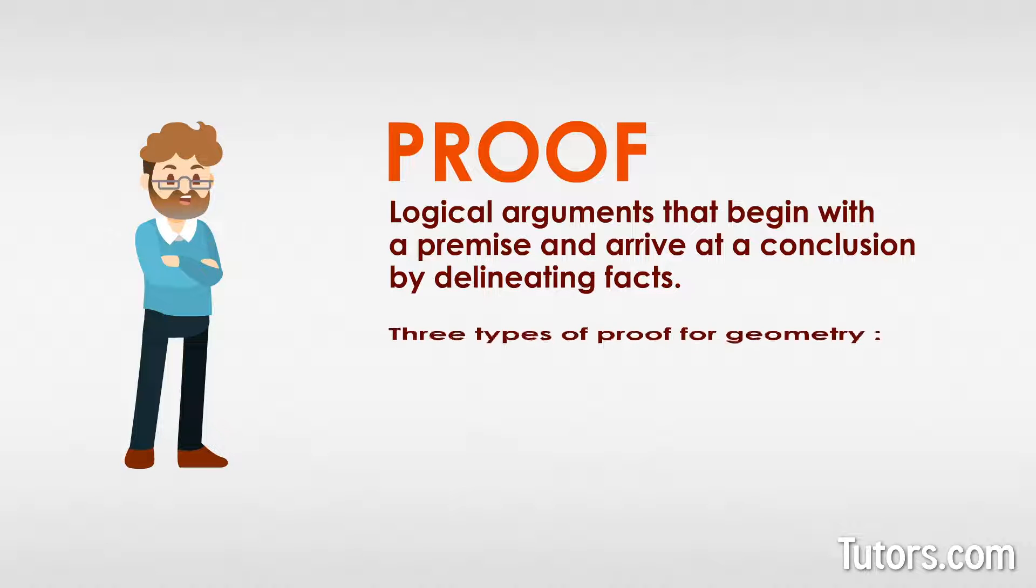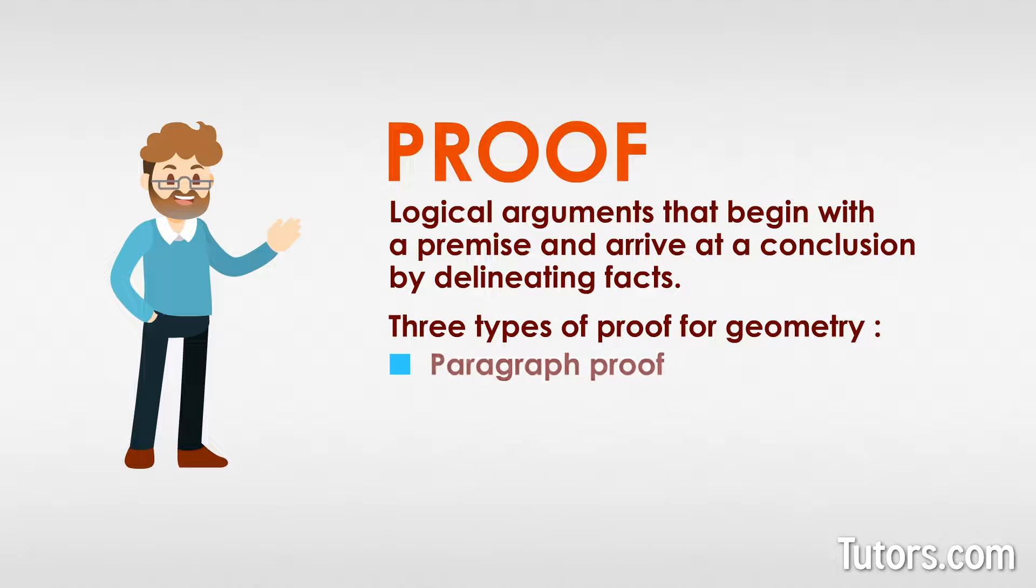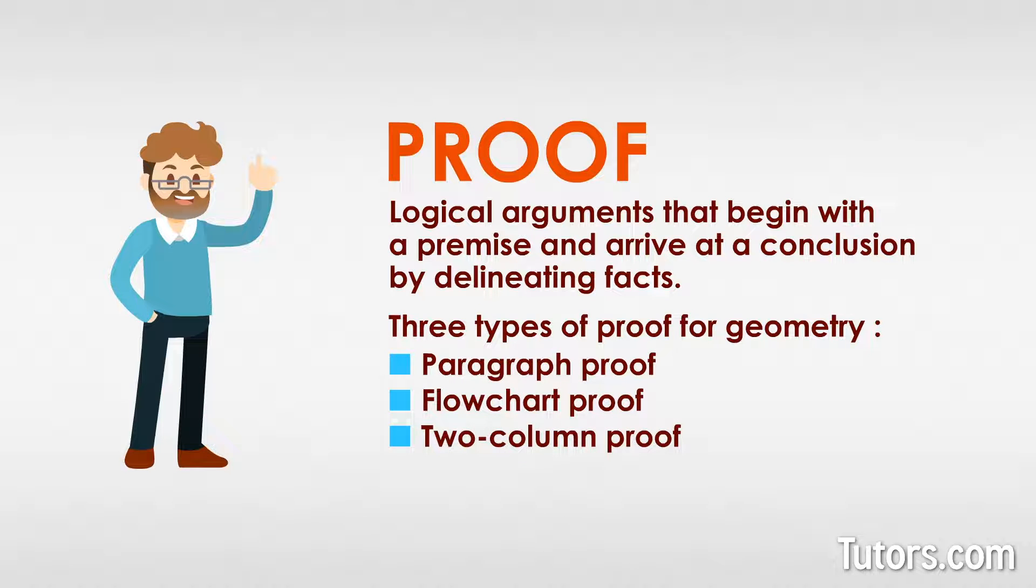Most geometry works around three types of proof: paragraph proof, flowchart proof, and two-column proof. Paragraphs and flowcharts can lay out the various steps well enough, but for purity and clarity, nothing beats a two-column proof.